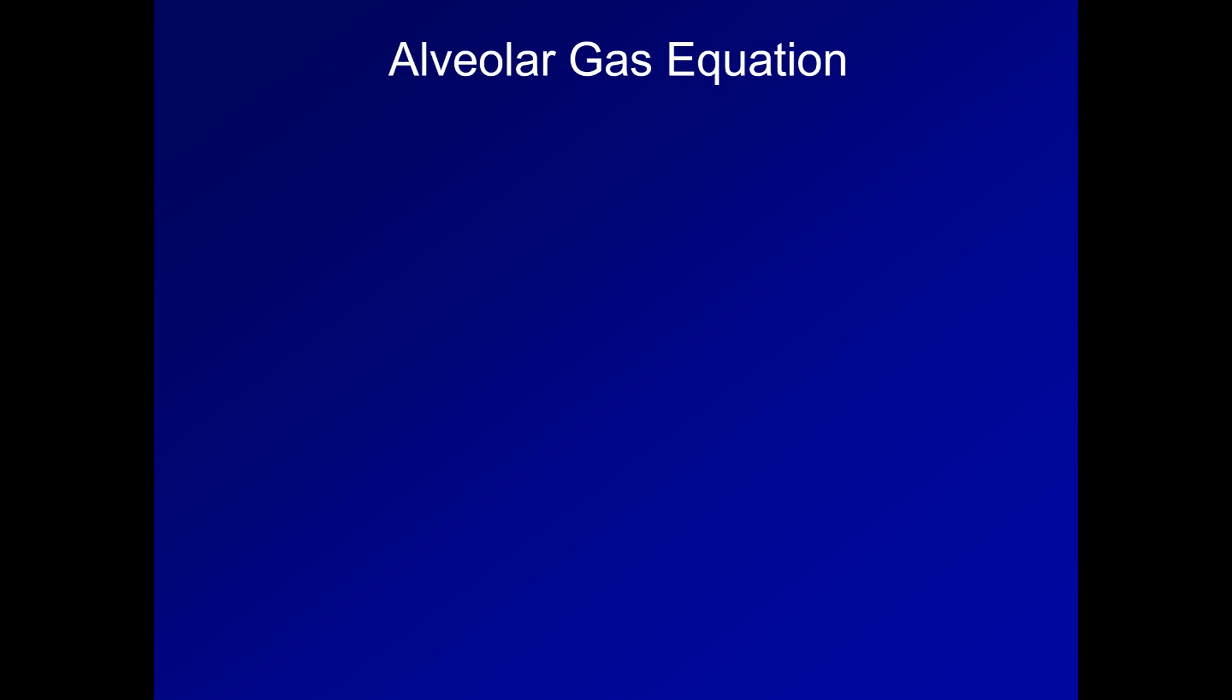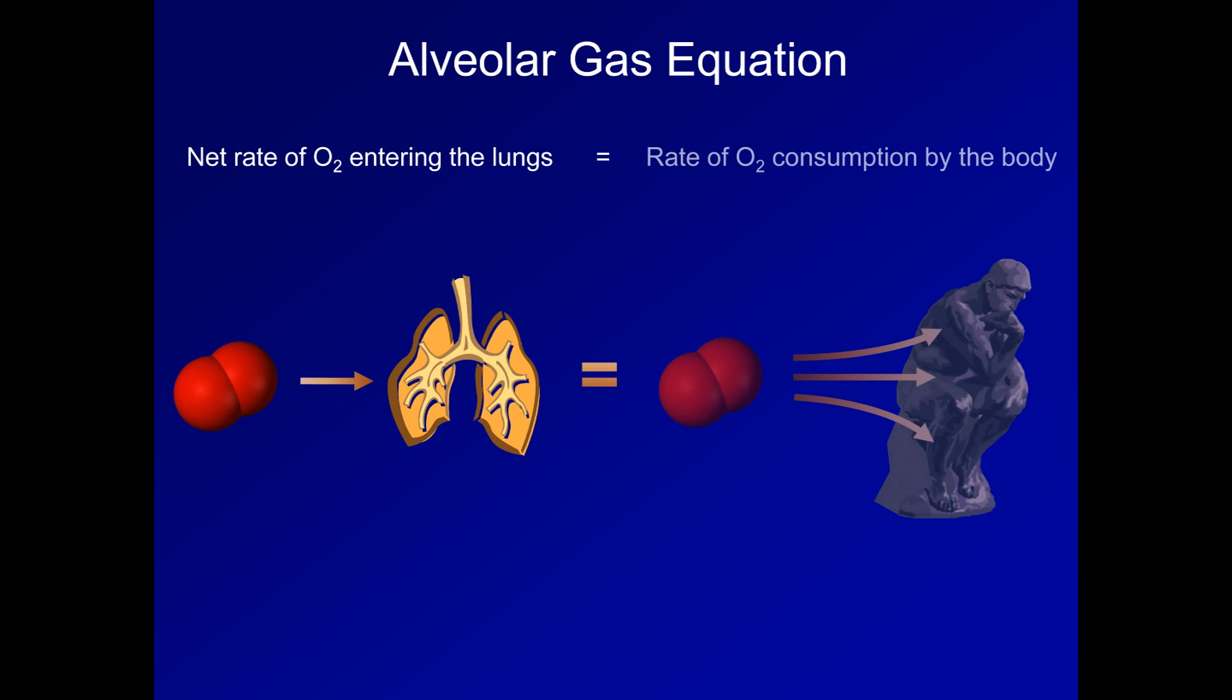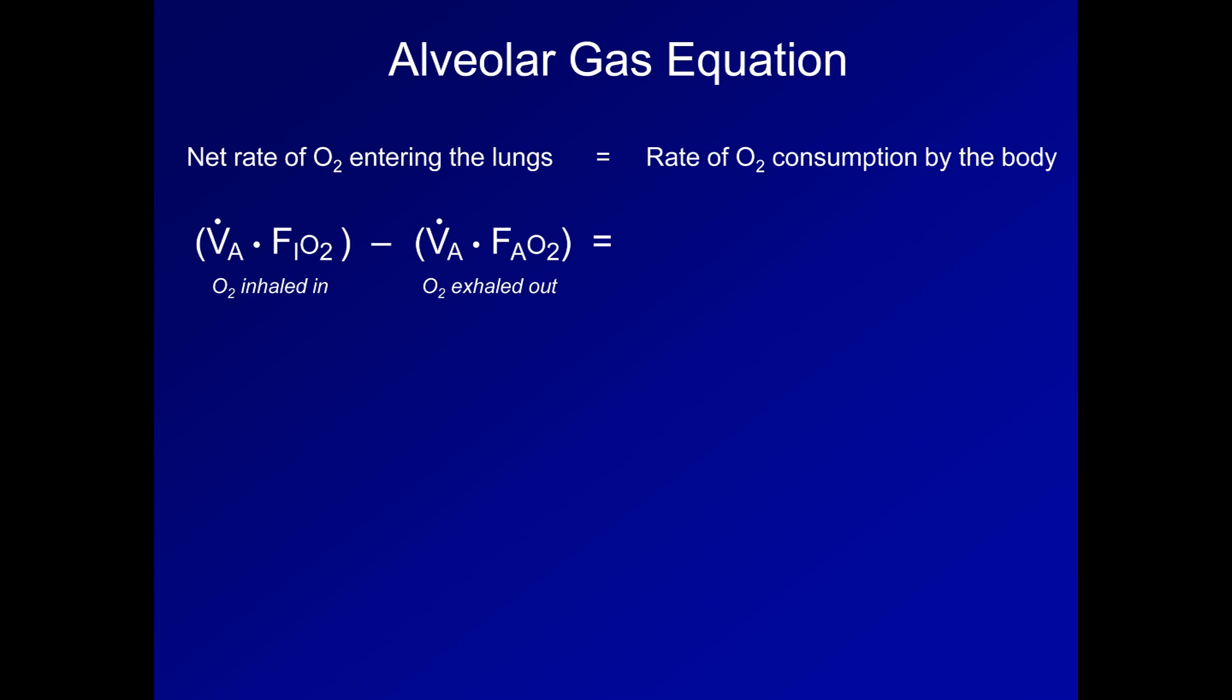Turning to the alveolar gas equation, which was originally known as the alveolar air equation, it is a means to calculate the partial pressure of alveolar oxygen, from which we can calculate the AA gradient. Its derivation utilizes the fact that the net rate of oxygen entering the lungs must equal the rate of oxygen consumption by the body. The net rate of oxygen entering the lungs is equal to the oxygen inhaled, which is alveolar ventilation times the fraction of O2 in inspired air, minus the alveolar ventilation times the fraction of O2 in alveolar air. This is equal to V dot O2, which is the rate of oxygen consumption by definition.